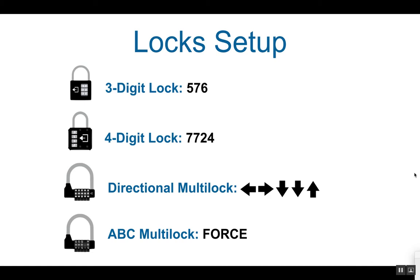To set up the locks: the 3-digit lock code is 5-7-6. The 4-digit lock code is 7-7-2-4. The directional multi-lock is left, right, down, down, up. And the ABC multi-lock is the word 'force.'